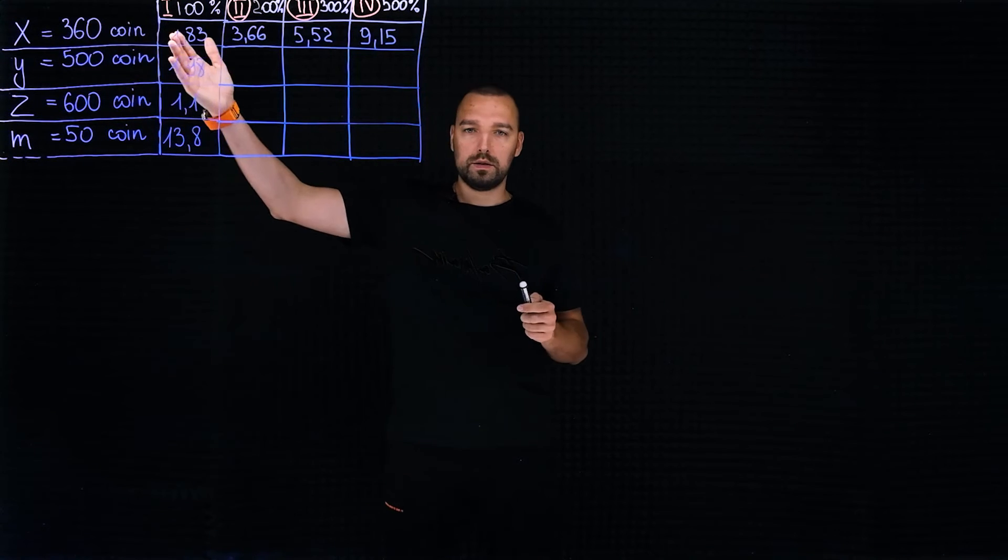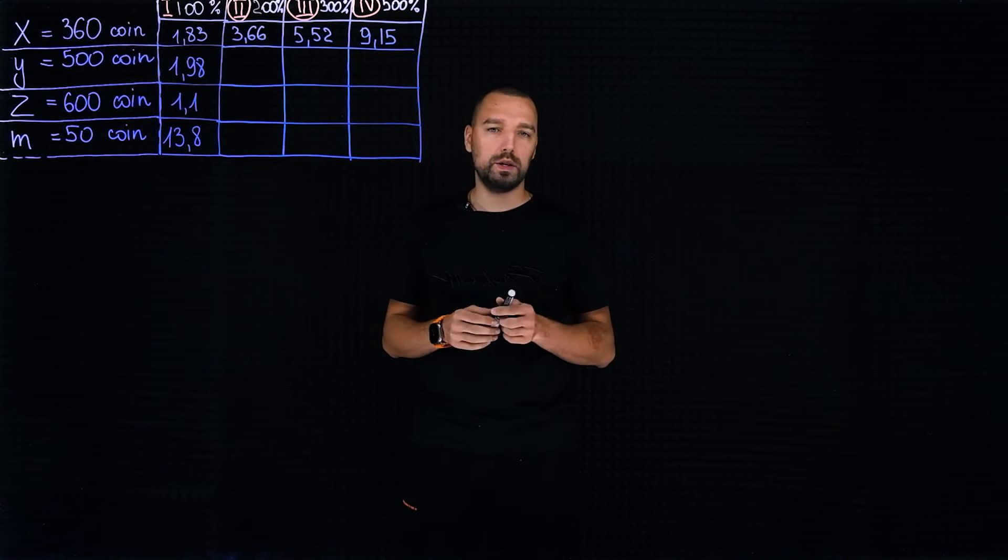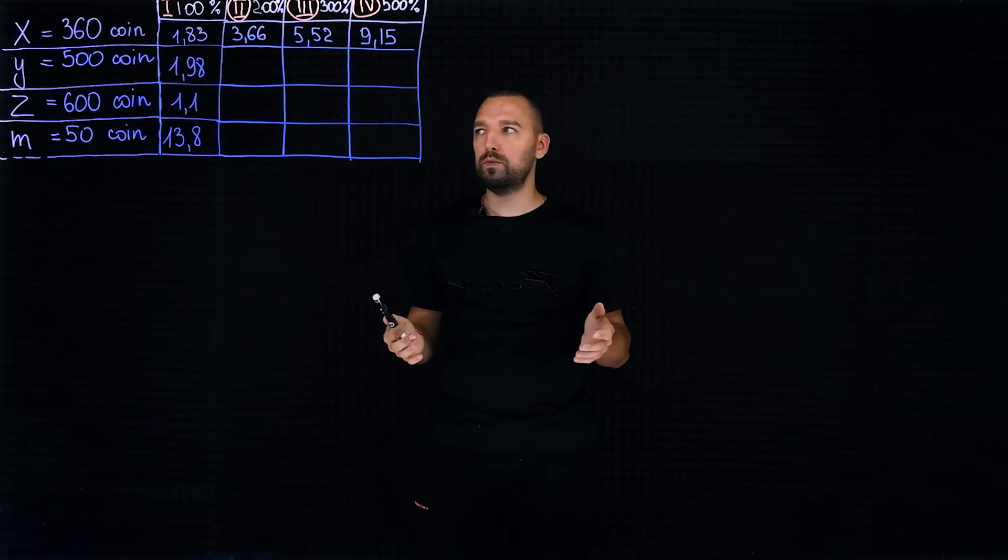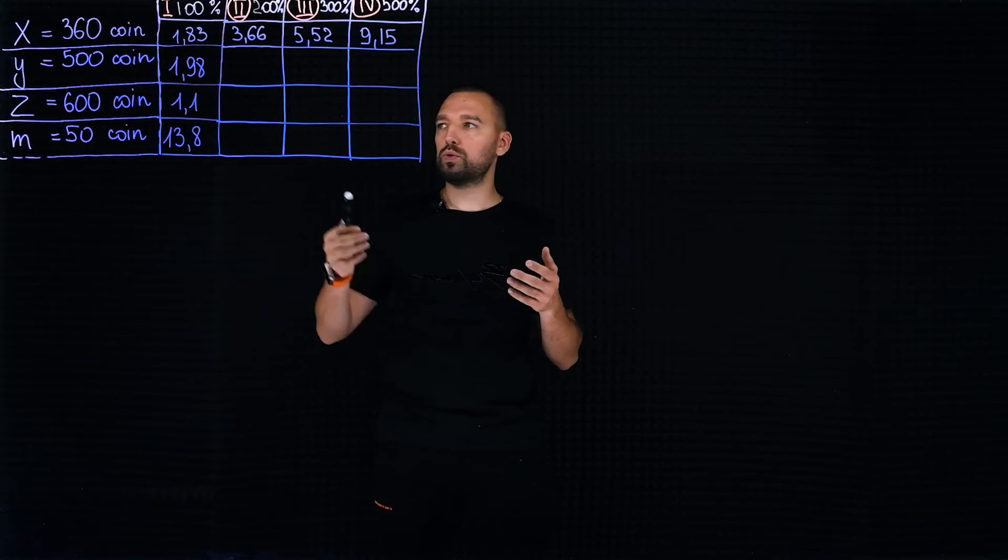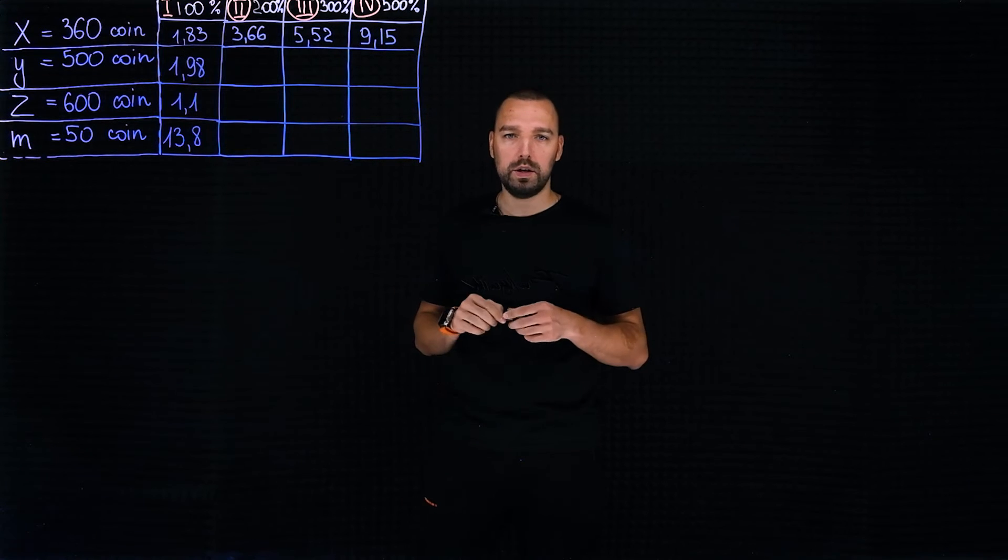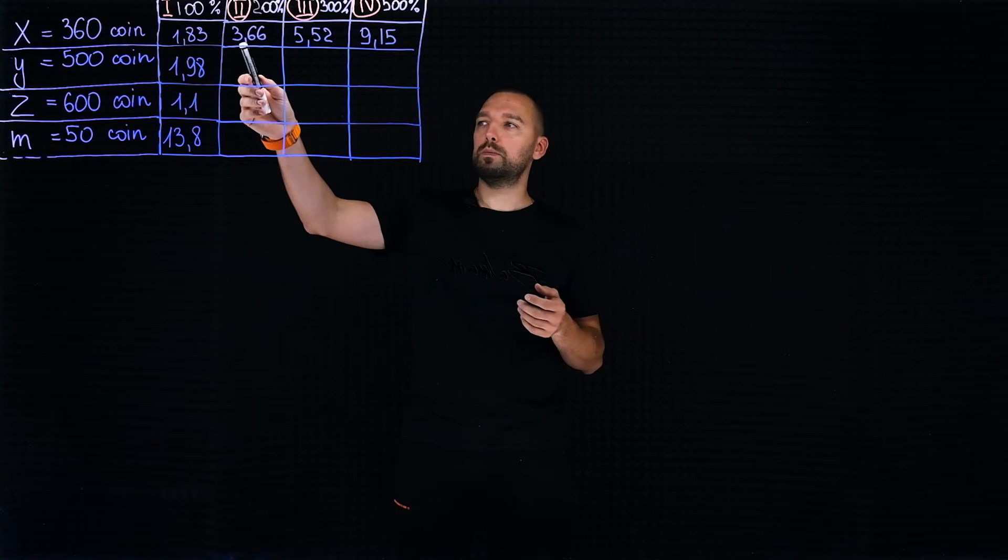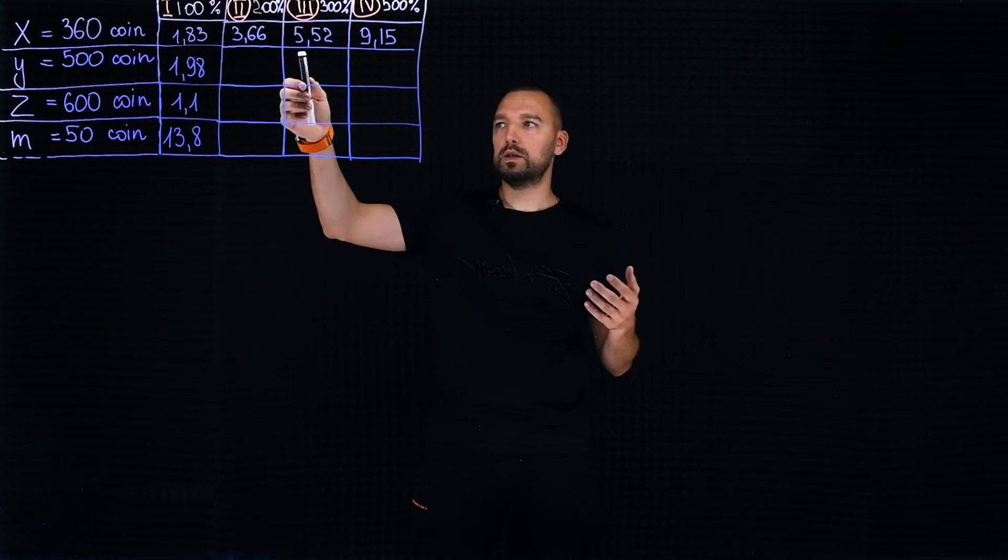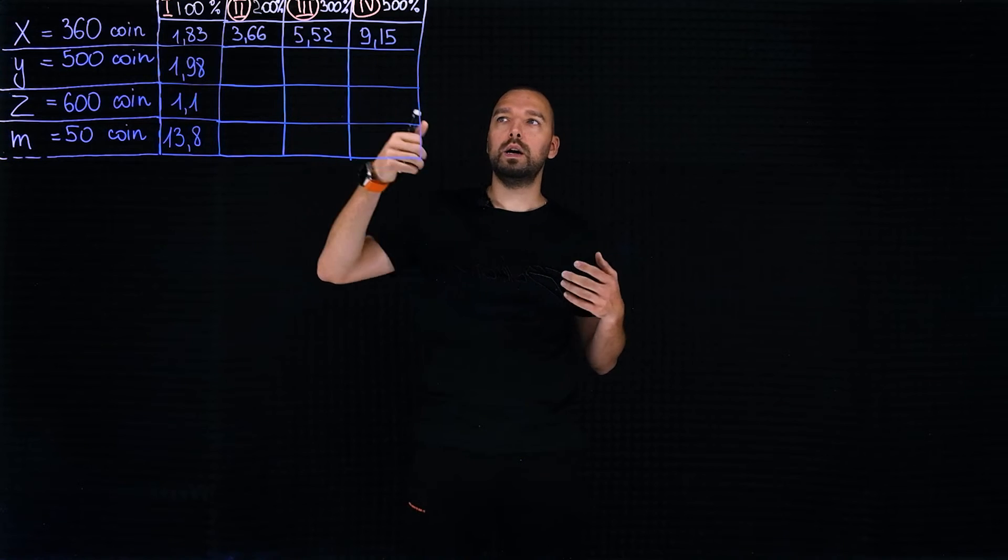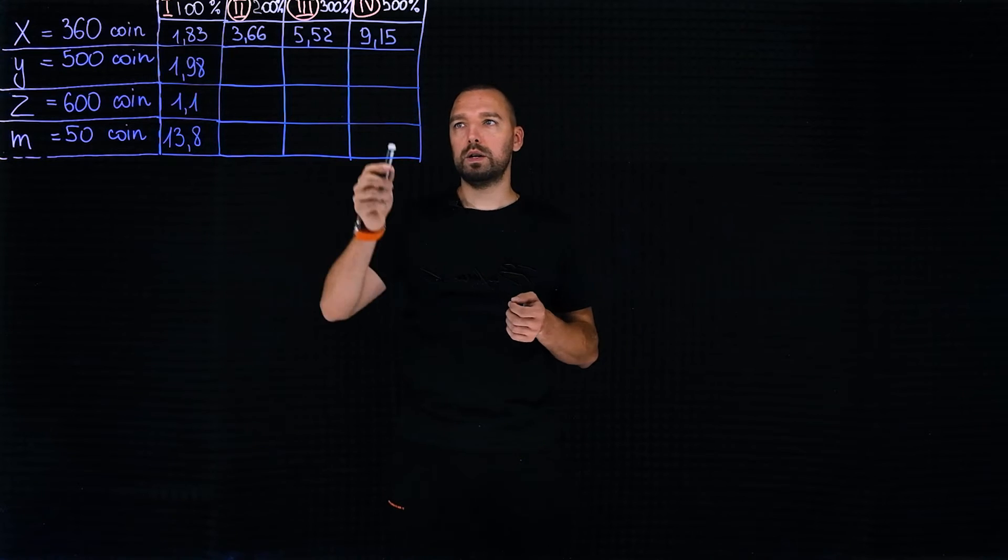For the X project, in order to achieve 100% annual payback, it is necessary to achieve a rate of 1.83. In order to get 200% per annum you need to get 3.66, 300% is 5.52, and 500% per annum is 9.15.